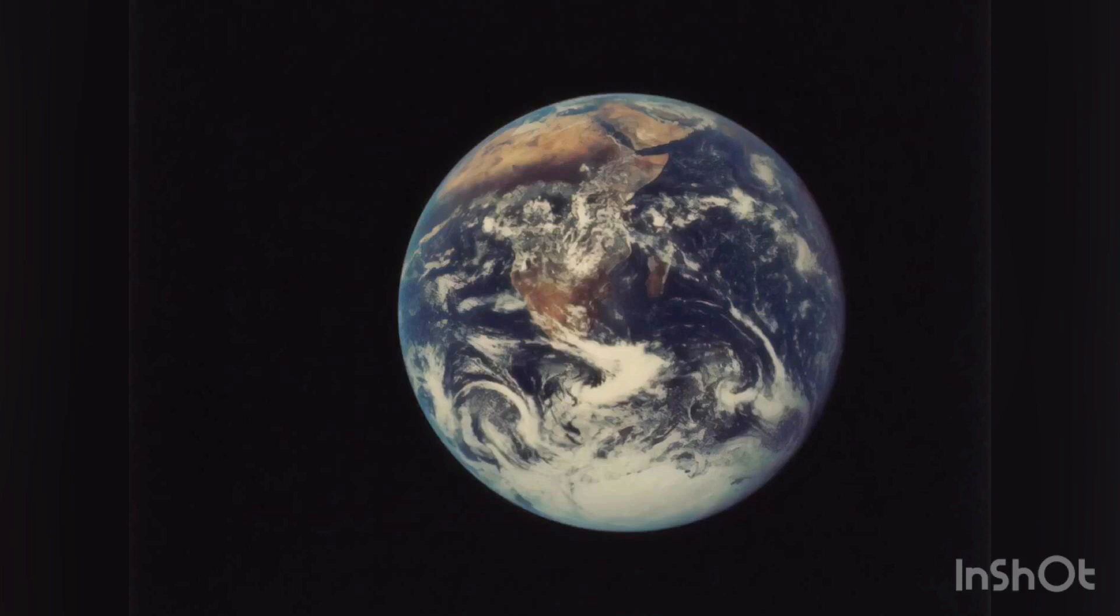Earth formed over 4.5 billion years ago. During the first billion years of Earth's history, the ocean formed and then life developed within it. Life spread globally and began to affect Earth's atmosphere and surface, leading to Earth's great oxidation event 2 billion years ago.